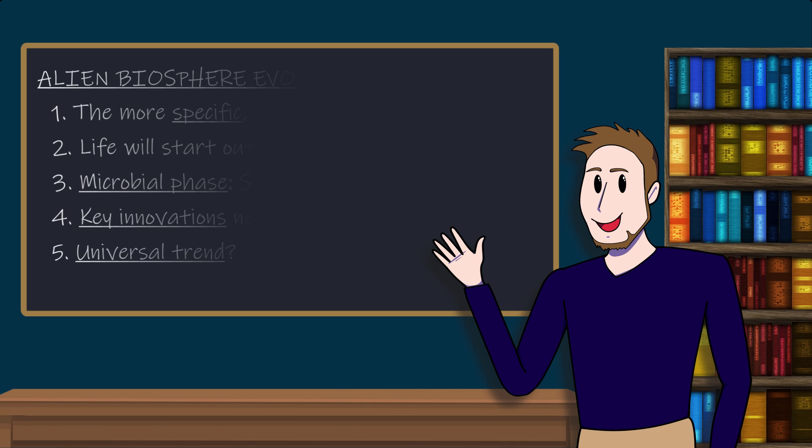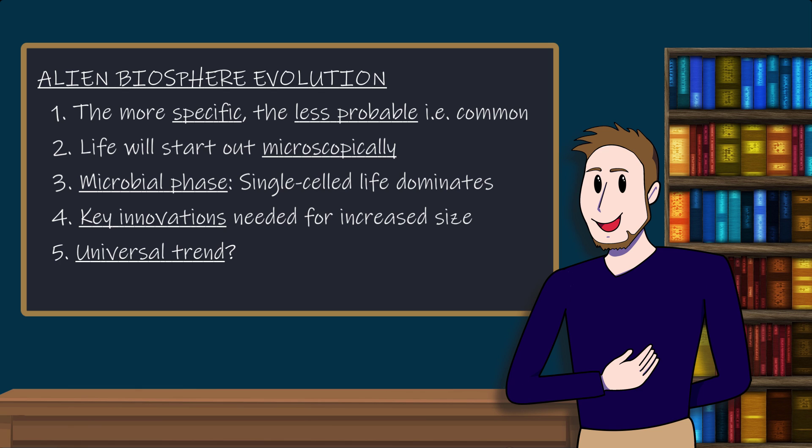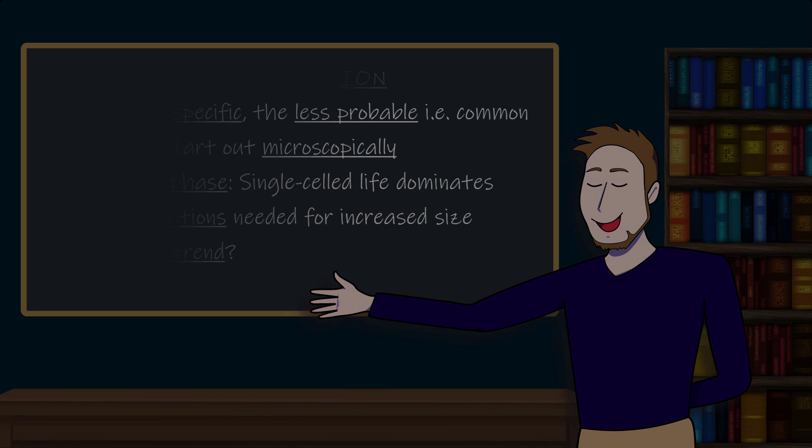That is because, starting from such humble beginnings, evolving creatures need to achieve key innovations in order to break through into the macroscopic world. So what are some of the strategies employed by living systems during evolution to attain ever greater sizes? And is there a single universal trend to be discerned? Let's find out.